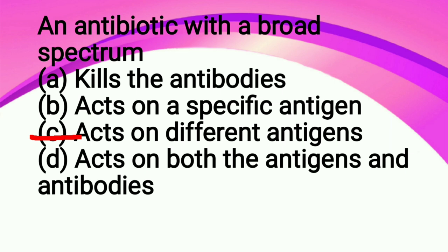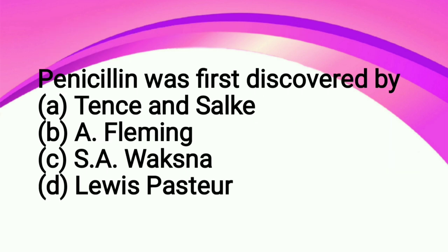Penicillin was first discovered by: option A Tensei and Salk, option B Alexander Fleming, option C S.A. Voxna, option D Lewis Pasteur. So the correct answer is Alexander Fleming, option B. Alexander Fleming first time discovered penicillin. He was doing some experiments.